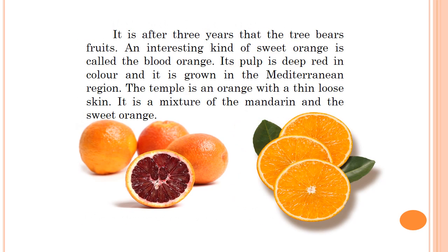It is after three years that the tree bears fruit. An interesting kind of sweet orange is called the blood orange; its pulp is deep red in color and it is grown in the Mediterranean region. The temple is an orange with a thin loose skin; it is a mixture of the mandarin and the sweet orange.